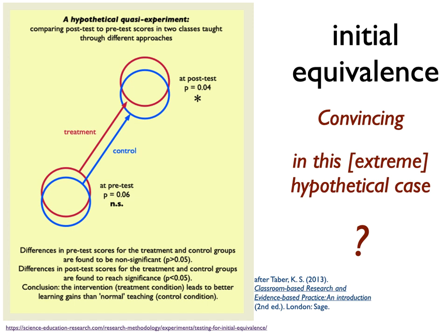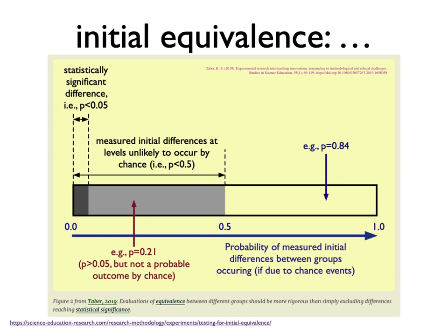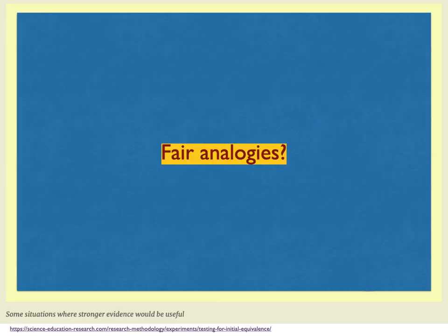My target here is a simple test for equivalence that is commonly used in published studies to supposedly establish a level playing field. This common approach is to test to see if there is a very unlikely difference between the pre-test measures in the different conditions. This means that differences which are unlikely to be due to chance effects but which are not so unlikely as to get a p-value below 0.05 are found equivalent. I do not think this is a sensible test for equivalence. It is a weak test and indeed inadequate.